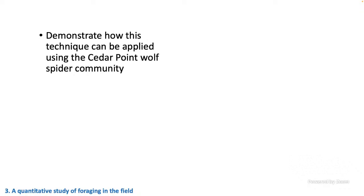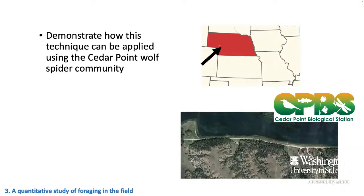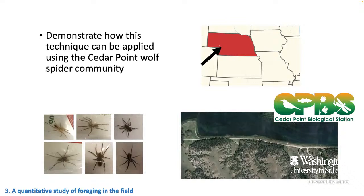Now I want to demonstrate a quantitative study of foraging in the field using these half-life corrections. I'll use the Cedar Point wolf spider community. Cedar Point Biological Station is one of the University of Nebraska's field sites, located in western Nebraska at the foot of the sand hills on the south shore of Lake Ovalala. Cedar Point really hosts a lot of spiders — at least a dozen different wolf spider species have been documented on the station, and it seems like every year we find at least one new species. They're often found right next to each other, eating the same kinds of prey, and all seem to have really robust, healthy populations. This seems like a great system to dig into and demonstrate this new technique.